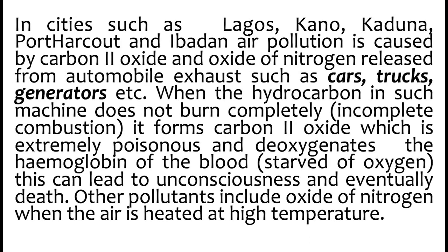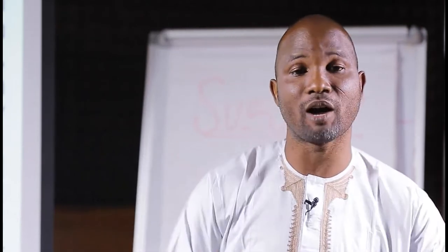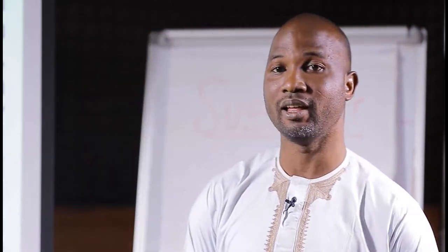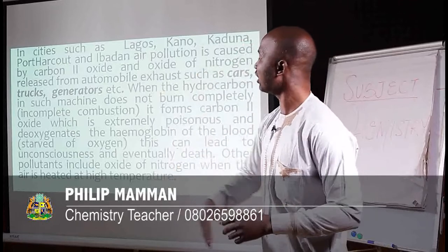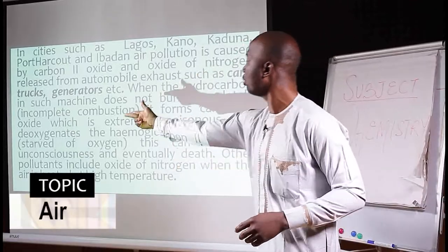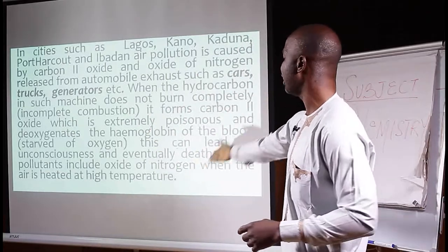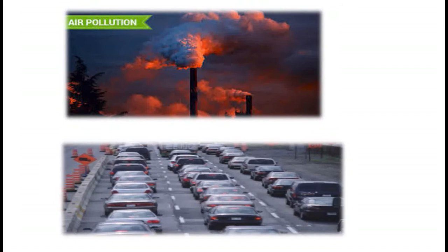Air pollution in cities is caused by carbon monoxide and oxides of nitrogen released from cars, trucks, generators, etc. There are two types of oxides of carbon: carbon dioxide and carbon monoxide. Carbon monoxide is dangerous — it is released when you keep a generator in an enclosed environment or burn coal in an enclosed room. Because of insufficient oxygen, it gives carbon monoxide. This carbon monoxide attacks the hemoglobin of the blood, starving it of oxygen, and can lead to unconsciousness and eventual death. This is why we hear of families being killed by generator fumes indoors.